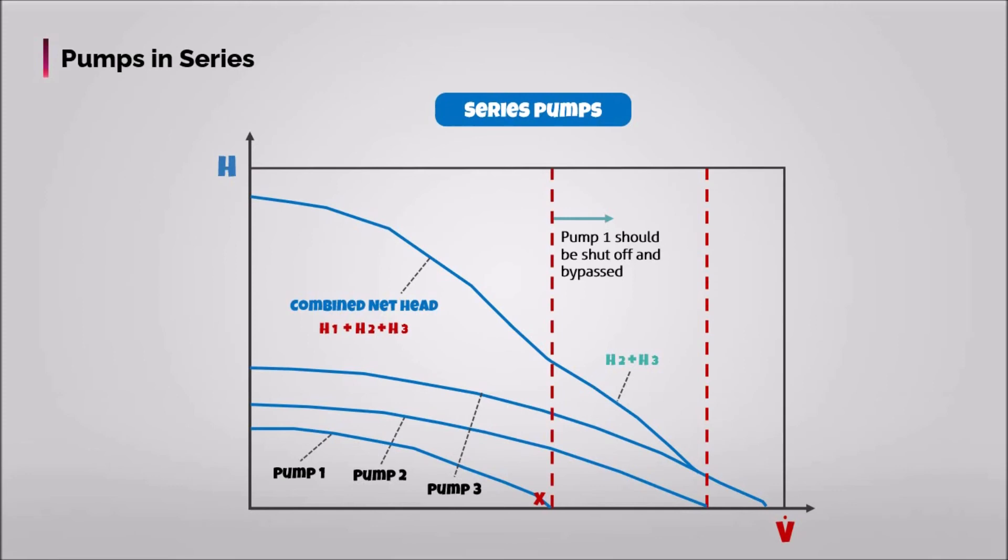Following this, in this area only pump two and three operate until reaching the limited point of pump two's delivery, where it should be shut off and bypassed. Consequently, only pump three will contribute in this area, delivering its head H3.